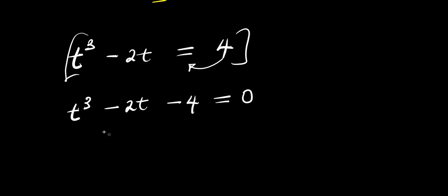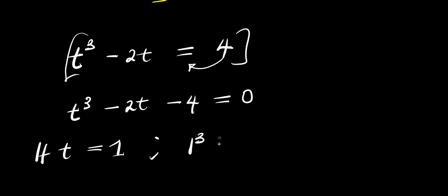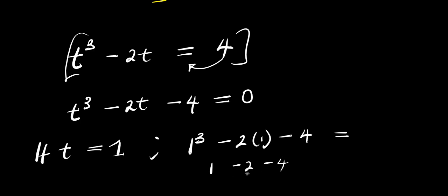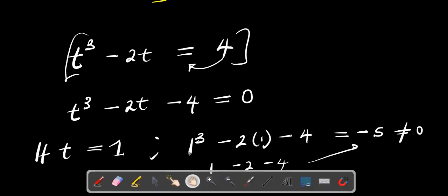Now, we will be testing for a value of t that will satisfy this equation. If t equals 1, if you insert 1 here, you have 1 cubed minus 2 times 1 minus 4. That gives 1 minus 2 minus 4, which is negative 1 minus 4, so this will give you negative 5. And negative 5 is not 0, so we proceed and consider t equals 2.